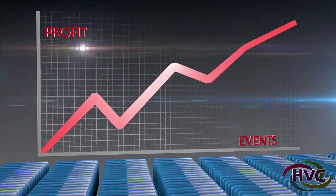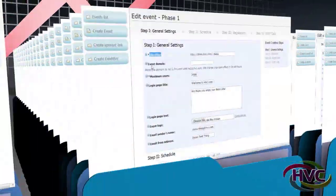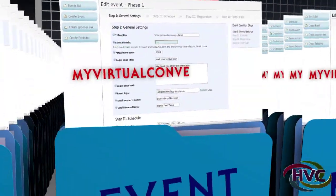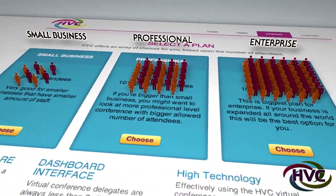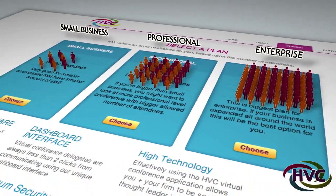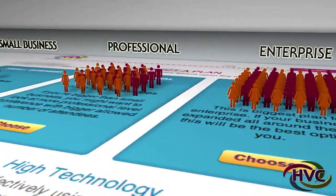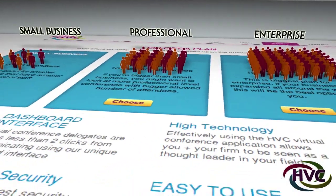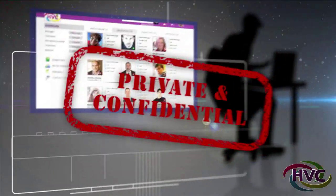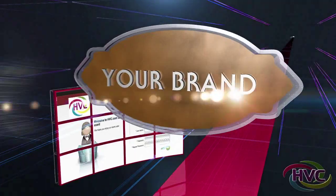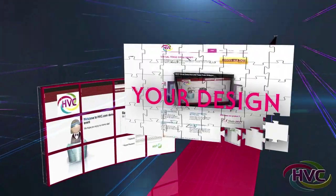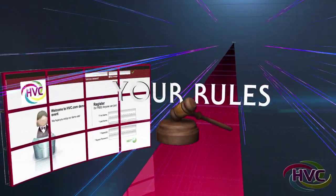As an HVC customer, you can run unlimited events. The event can also be set as your internet domain name or a subdomain. There are three prices for the HVC application based on the number of users you have at your virtual event. Please note that your data is private and belongs to you. Your brand. Your design. Your rules. Your conference.